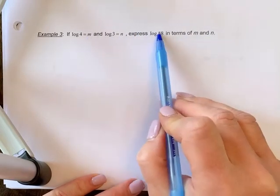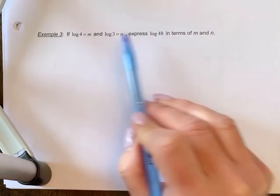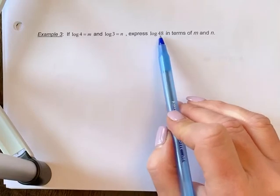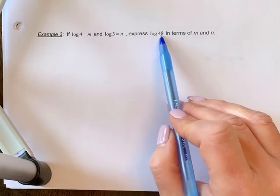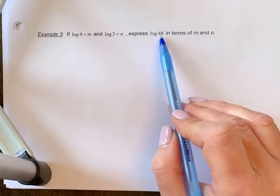What we want to do is break down 48 and find how we can use the numbers 4 and 3 to represent 48. You can think multiply, use exponents, etc.